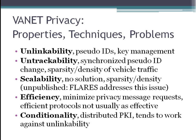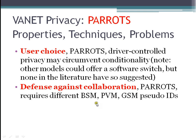Finally, conditionality. Most people would say they want conditional privacy — in other words, we want privacy in most circumstances, but if there were an accident or a terrorist situation, you could go back and check who was where and when, and re-link those identities. Conditionality and unlinkability tend to work at odds with each other, just as efficiency and scalability work at odds. I think user choice is important, but apparently nobody else does, so I'll leave that issue to another day.